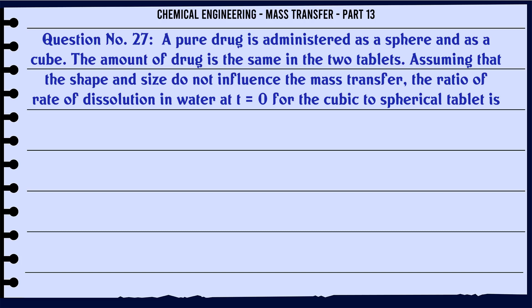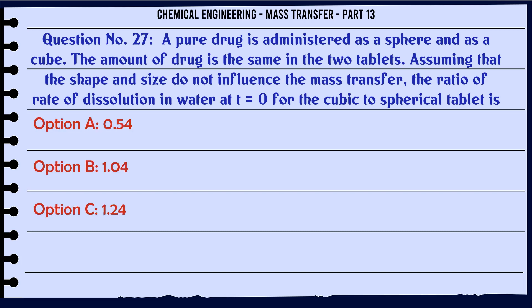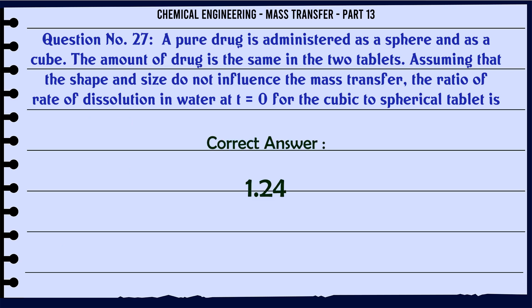A pure drug is administered as a sphere and as a cube. The amount of drug is the same in the two tablets. Assuming that shape and size do not influence mass transfer, the ratio of rate of dissolution in water at T0 for the cubic to spherical tablet is: A. 0.54. B. 1.04. C. 1.24. D. 1.94. The correct answer is: 1.24.